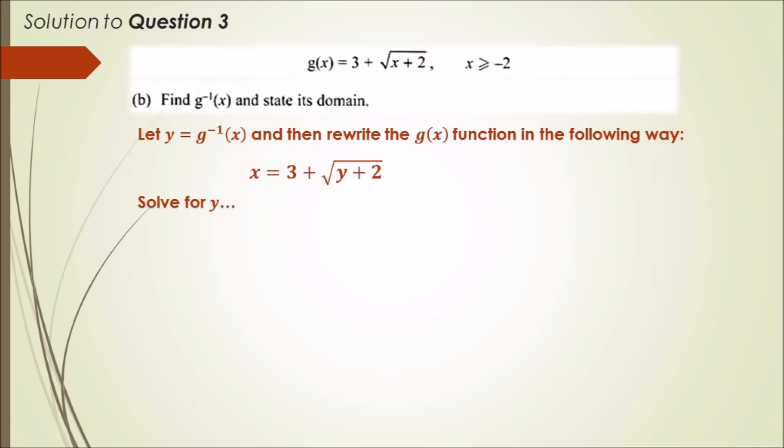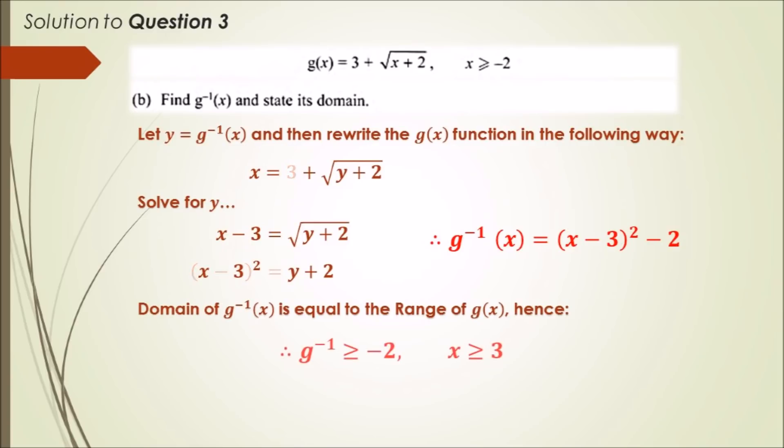Now all you want to do is solve for y because we know that y is going to be the inverse. Subtract 3 across and then square both sides, and finally subtract 2. We should get the inverse function here. One special property about inverse functions is that the domain of the inverse equals the range of the original function, and likewise the range of the inverse equals the domain of the original function. Hence, the range of the inverse is greater than or equal to minus 2, and the domain is greater than or equal to 3.